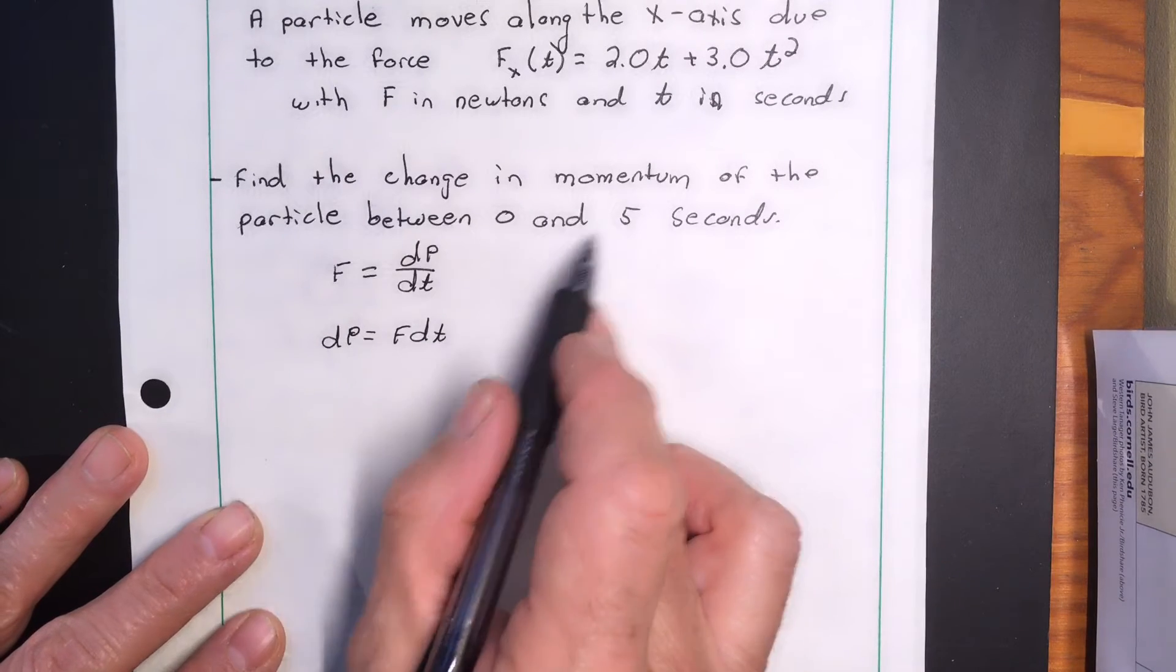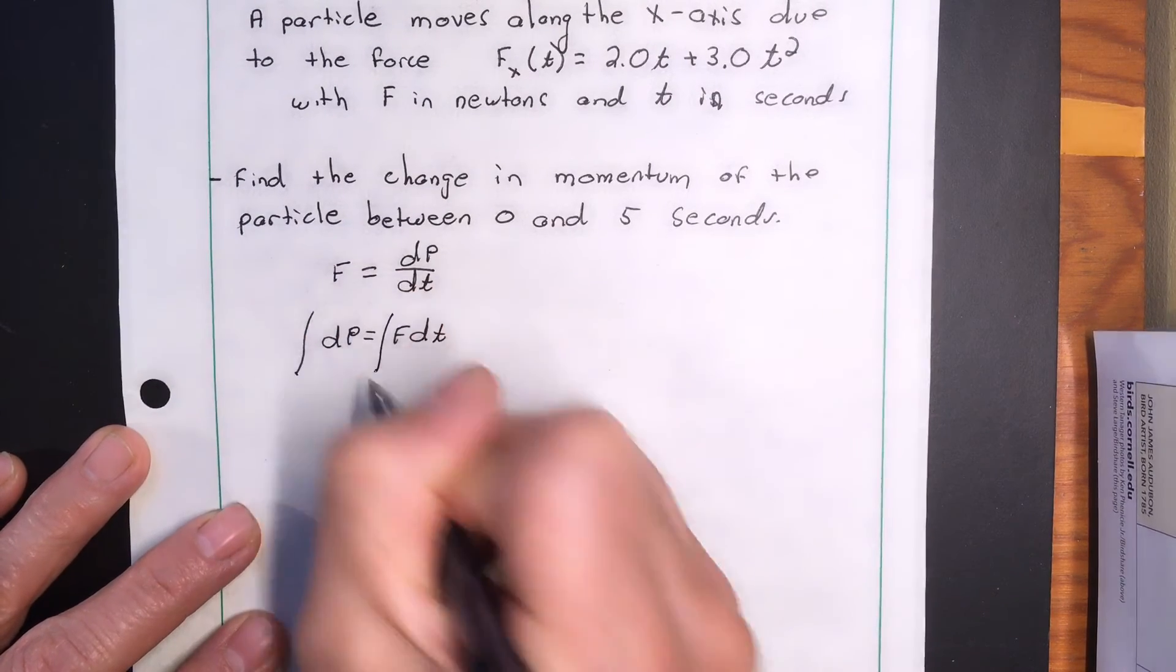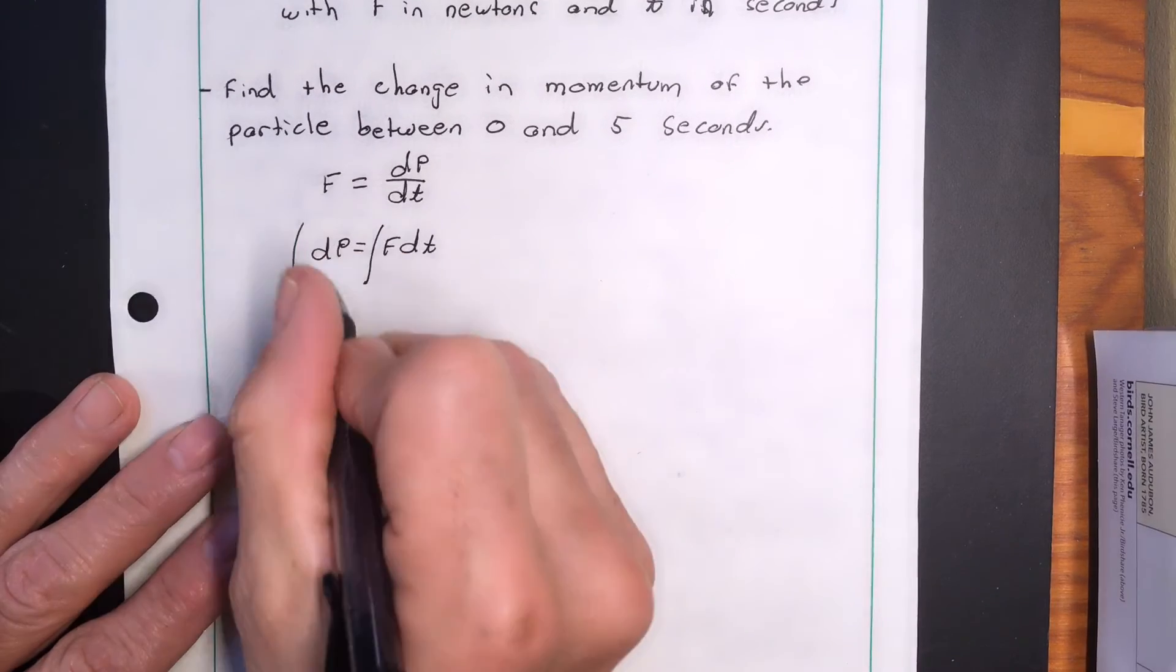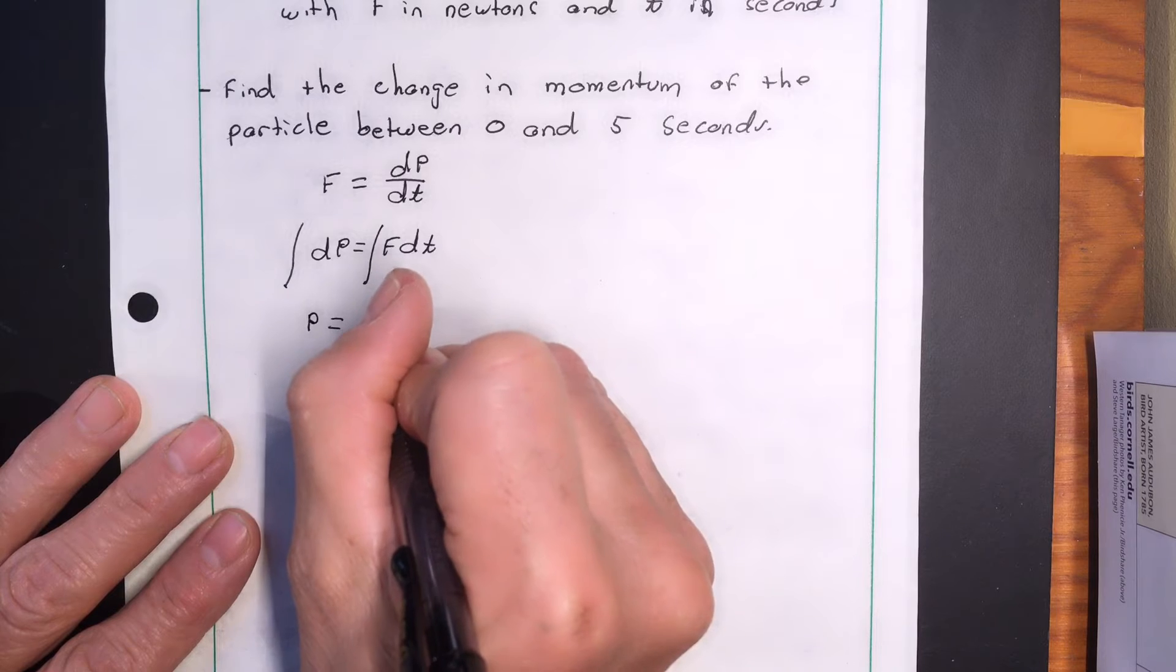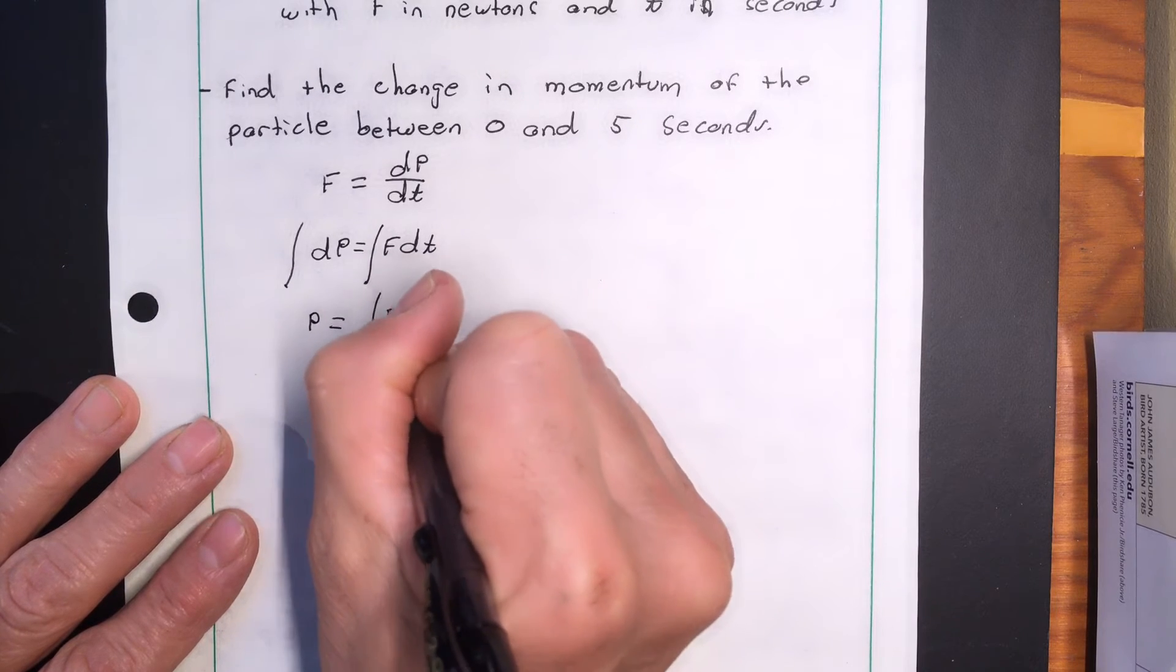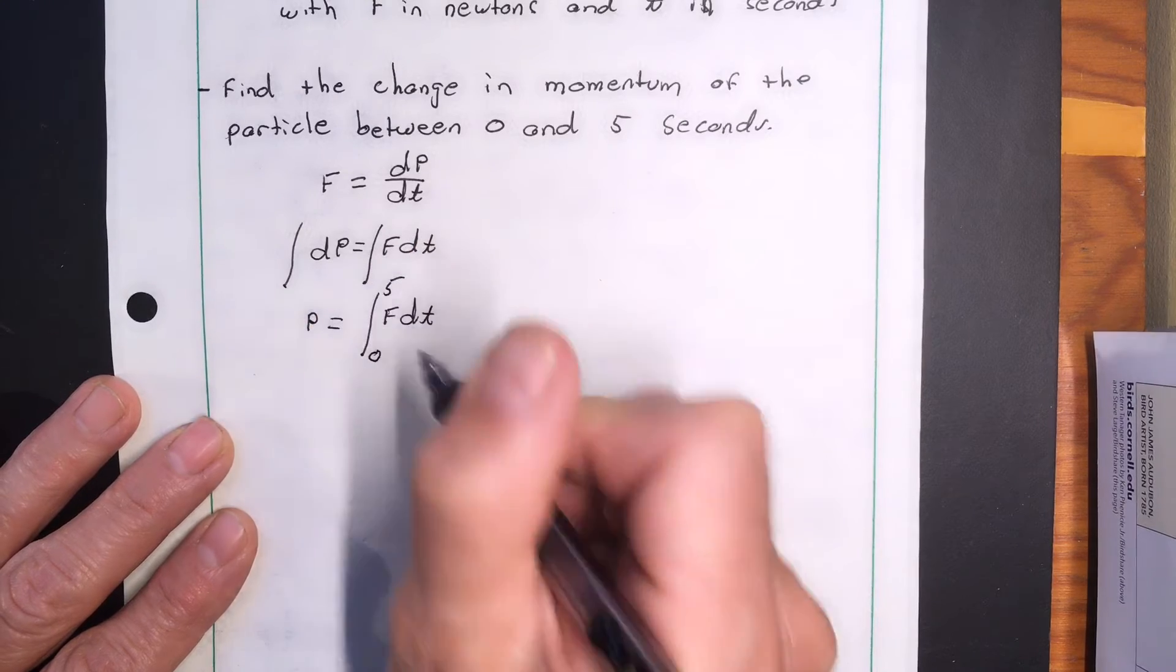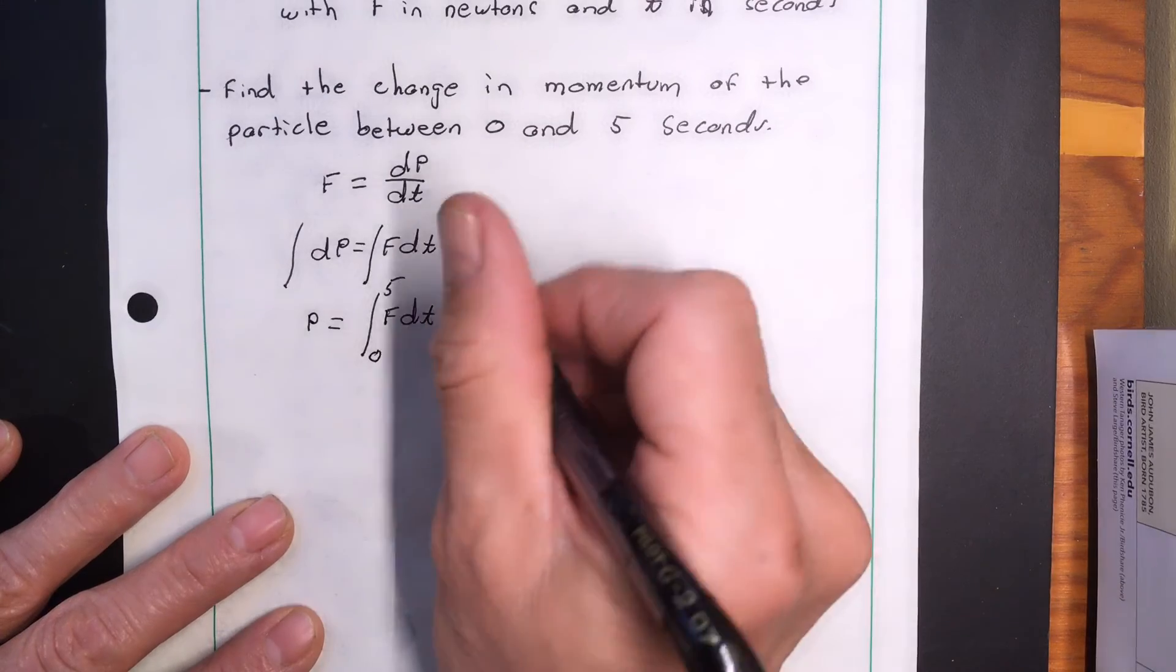So to find the change momentum, we integrate both sides. So this is just momentum and this is the integral of f dt from zero to five seconds. That's the momentum change that occurs in that time period.